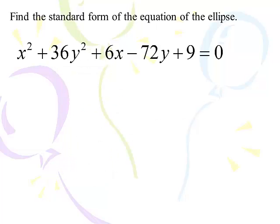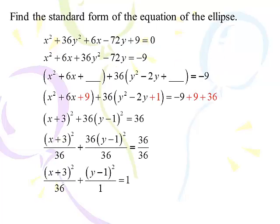Next: x² + 36y² + 6x − 72y + 9 = 0. Move the 9, group terms, and complete the square. No factor needed for x², but factor 36 from the y-terms. Half of 6 is 3, 3² = 9, add 9 to the other side. Half of 2 is 1, 1² = 1, but add 36×1 = 36 to the other side. Result: (x + 3)² + 36(y − 1)² = 36. Divide by 36: (x + 3)²/36 + (y − 1)²/1 = 1. Center: (−3, 1), a² = 36, b² = 1, c² = 35.